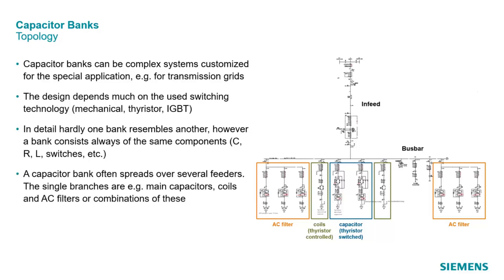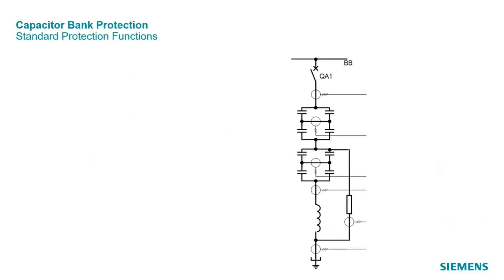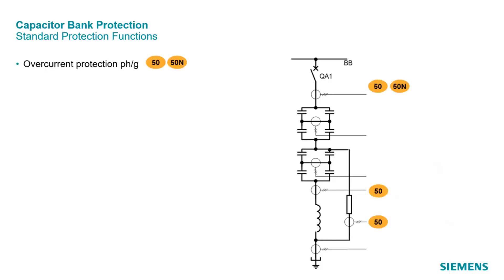A capacitor bank often spreads over several feeders. The single branches are, for example, main capacitors, coils, and AC filters or combinations of these. Some protection tasks can be solved with standard protection functions. The overcurrent protection for phase and ground faults is used to detect any kind of internal short circuit fault current, used as an overall protection for the complete capacitor bank, and can also be used inside the AC filter element.